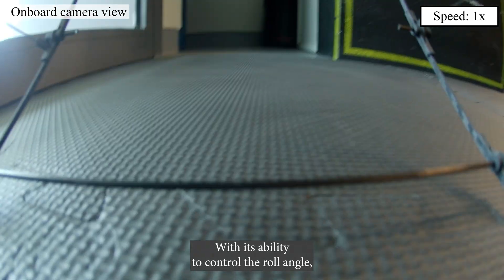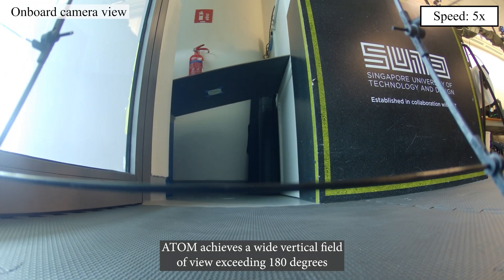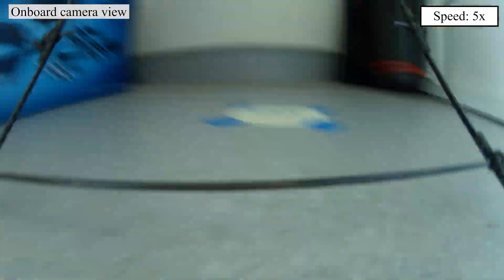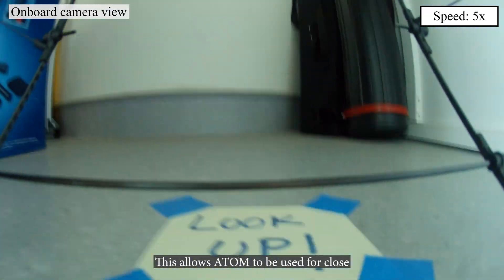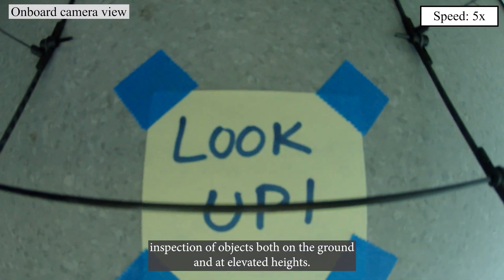With its ability to control the roll angle, Adam achieves a wide vertical field of view exceeding 180 degrees with the camera. This allows Adam to be used for close inspection of objects both on the ground and at elevated heights.